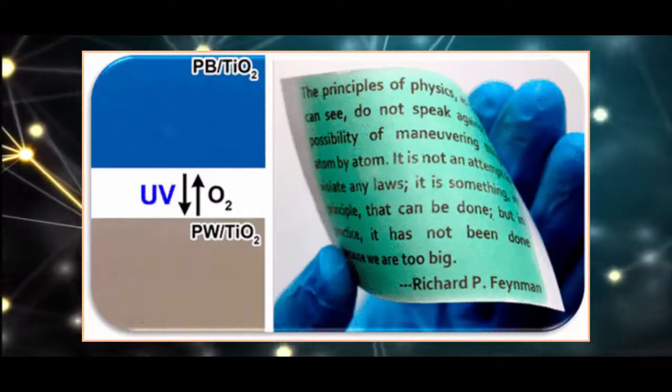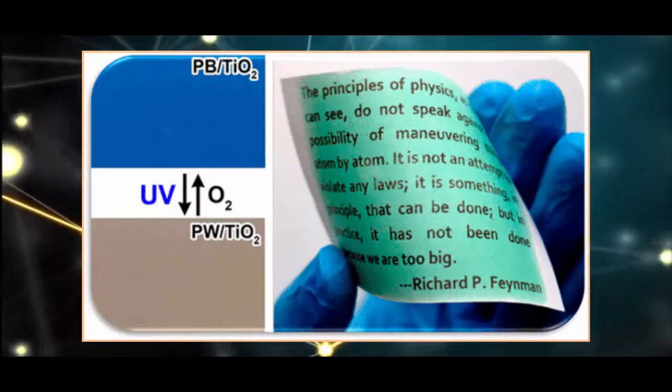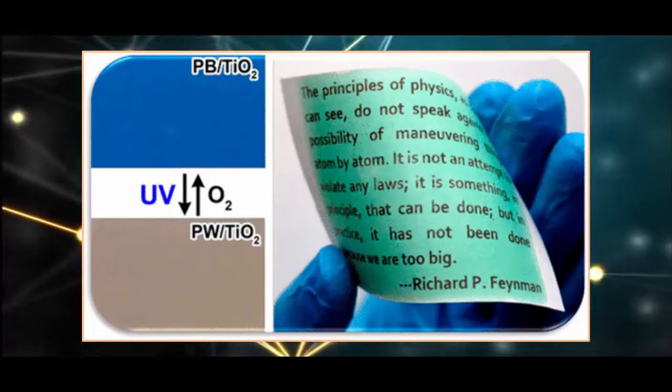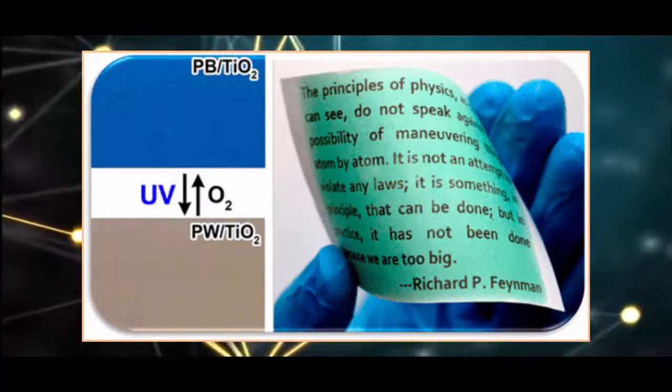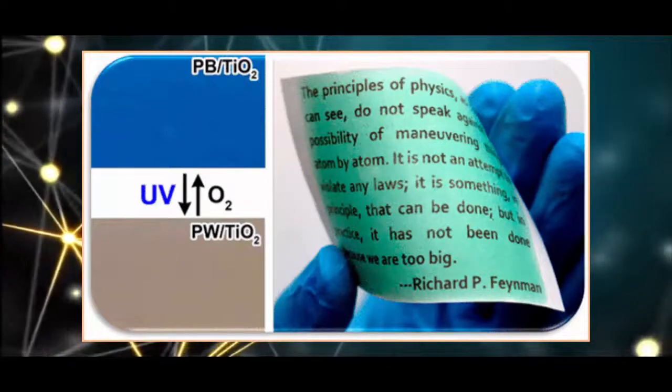Mix these two substances together, and you get a coating that's solid blue. Add some UV light, and the TiO2 particles are excited, releasing electrons that turn the Prussian blue pigment colorless. The method essentially prints the blank parts of the page.